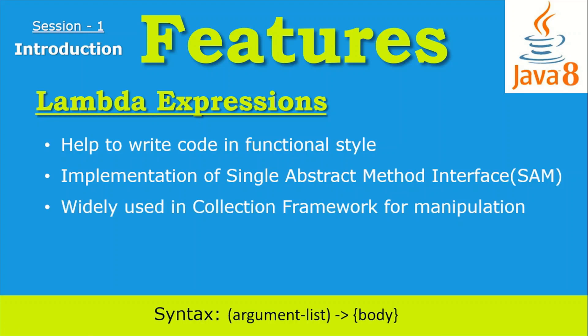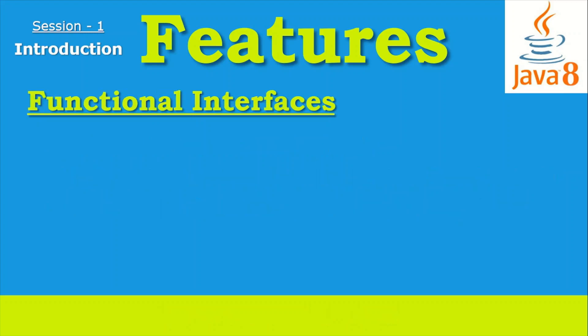This is the syntax to declare a lambda expression. We have an argument list, then the special arrow symbol — a hyphen and greater-than sign — and after that we can define the body of the abstract method which is available in the interface.